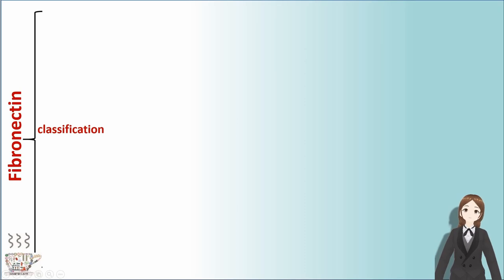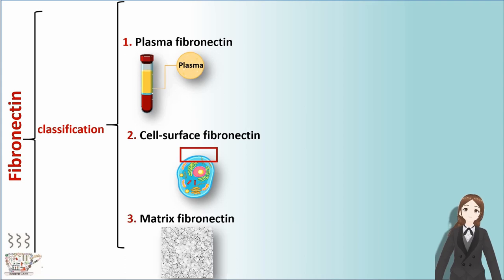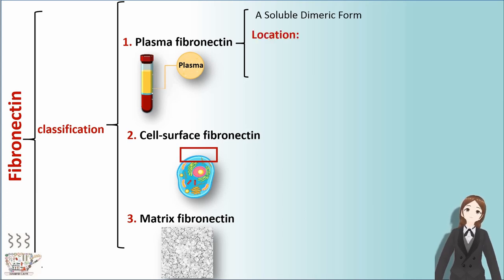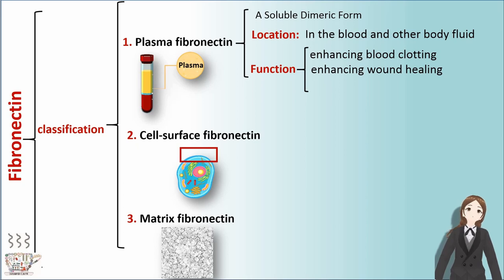Fibronectin can be divided into three subgroups: plasma fibronectin, cell surface fibronectin, and matrix fibronectin. Plasma fibronectin is a soluble dimeric form located in blood and other body fluids. It plays roles in enhancing blood clotting, enhancing wound healing, and enhancing phagocytosis.